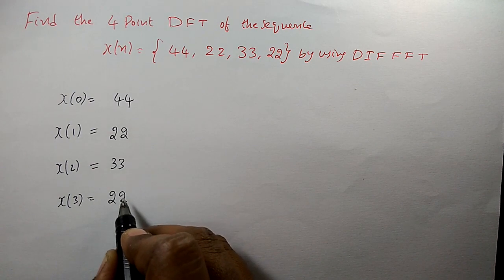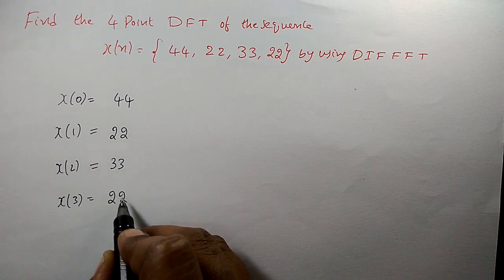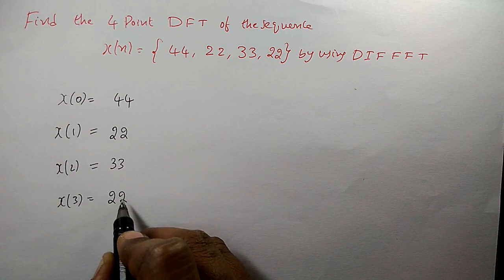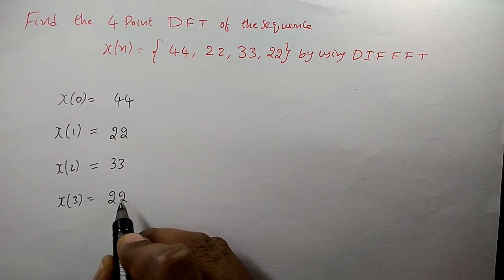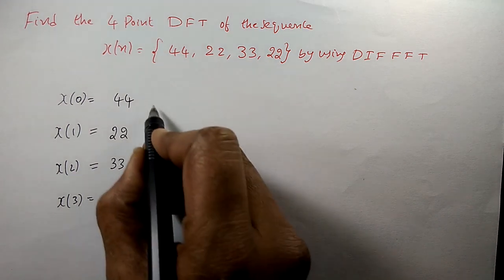For capital N equal to 4, there are 2 stages. The formula is log N base 2, so log 4 base 2 gives 2 stages.